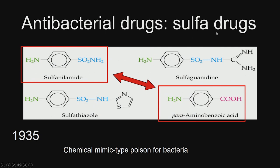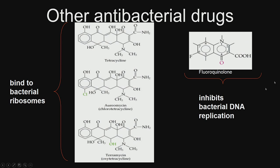Sulfa drugs may still be used for some skin infections in ointments. Other antibacterial drugs include tetracycline, erythromycin, terramycin, and fluoroquinolones. These drugs bind to bacterial ribosomes, whereas fluoroquinolones bind to DNA replication, so the DNA does not get replicated. You can see different modes of action: penicillin prevents cell wall synthesis, tetracyclines bind to bacterial ribosomes, and fluoroquinolones prevent DNA replication. Pharma companies look at different possible targets and design molecules towards those targets.